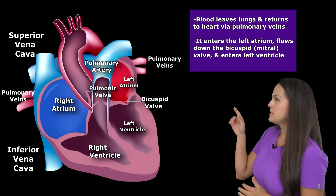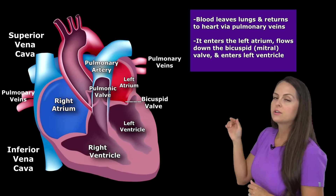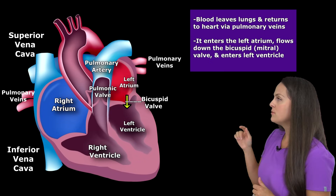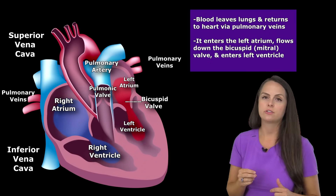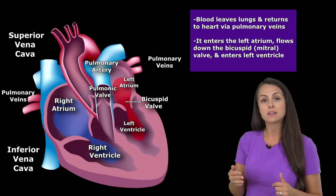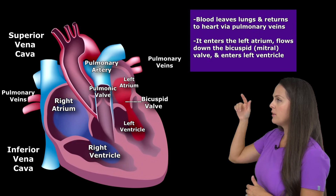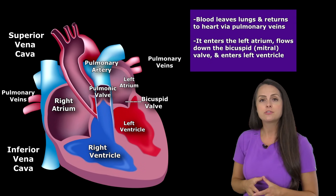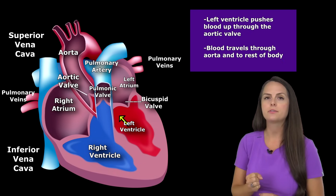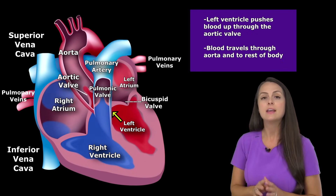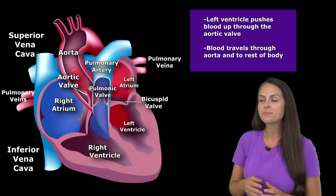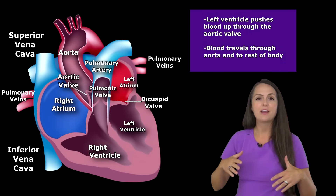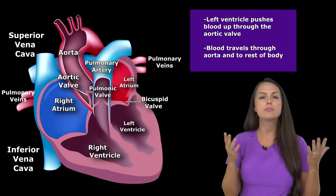This oxygenated blood, after it leaves the pulmonary veins, goes into the left atrium — the top chamber of the heart on the left side — and flows down through the second atrioventricular valve, known as the bicuspid valve or the mitral valve. It flows down through this valve into the left ventricle. The left ventricle is super strong and pushes the blood up through our second semilunar valve, known as the aortic valve, which shoots it up through the aorta, pumping it all throughout your body.